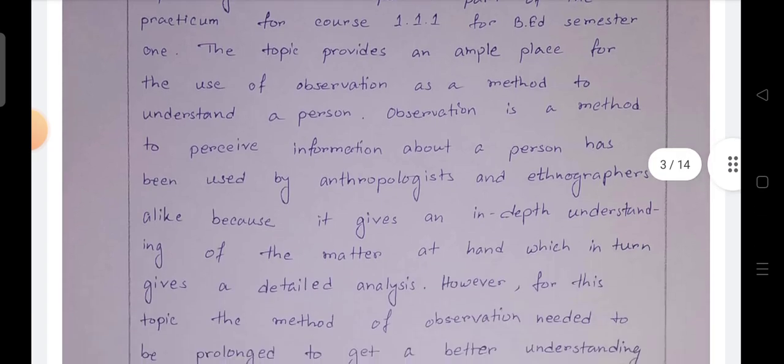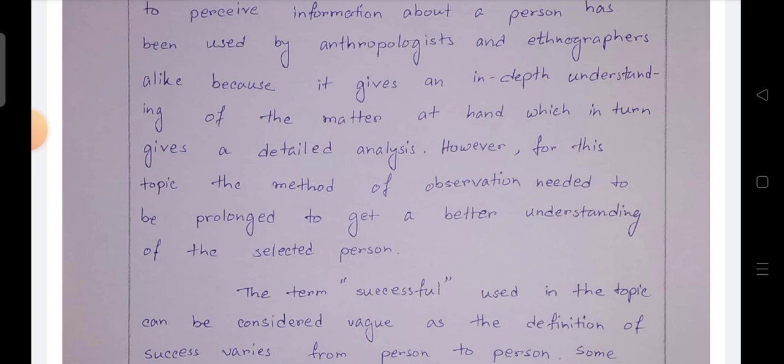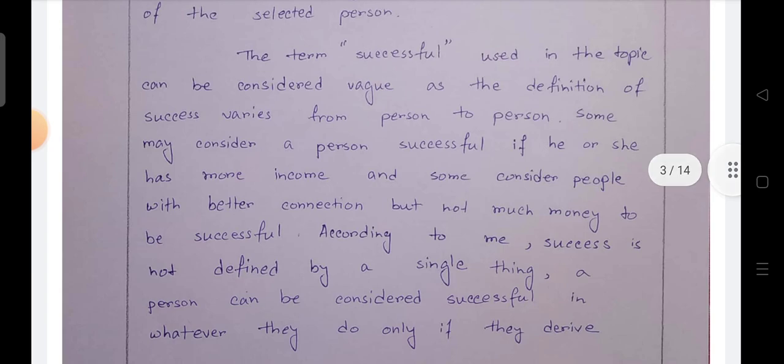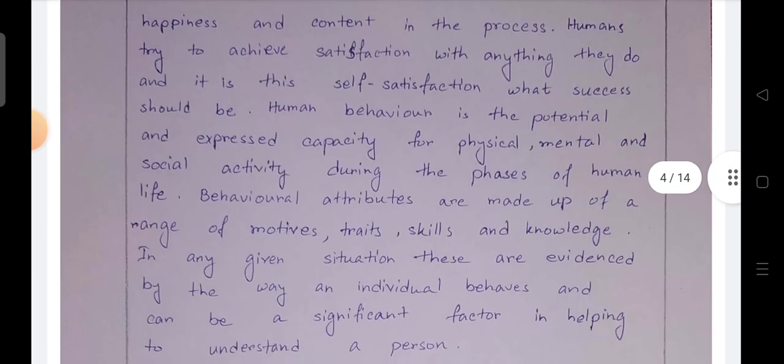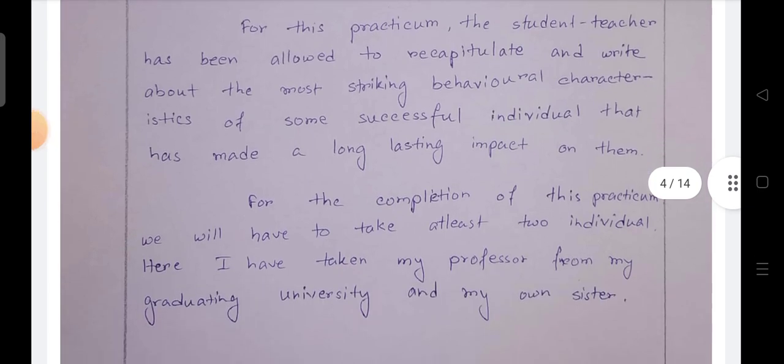Page number two, observe some successful individual. The term successful used in the topic can be considered a huge term as the definition of success varies from person to person. Page number three: happiness and contentment in the process. Humans try to achieve satisfaction with anything factor in helping to understand a person. For this practicum, the student teacher has been allowed to recapitulate and write about the most striking behavioral characteristics.